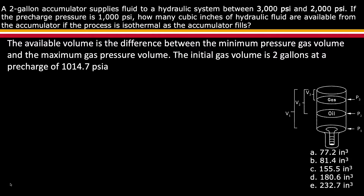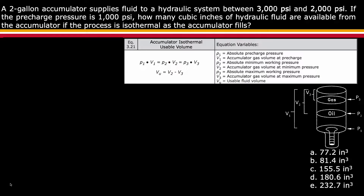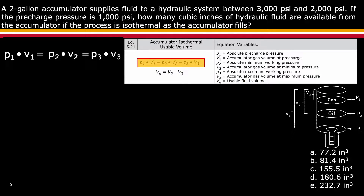The initial gas volume is 2 gallons at a pre-charge of 1,014.7. Use equation 3.21 to find the usable volume. First, use the top part of the equation, which is p1 times v1 equals p2 times v2 equals p3 times v3.